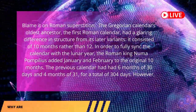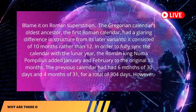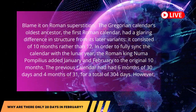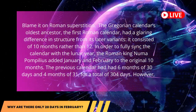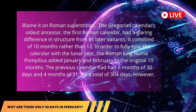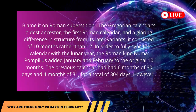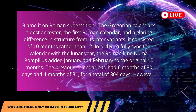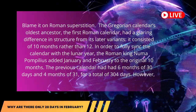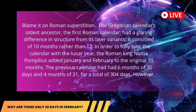Blame Roman superstition. The Gregorian calendar's oldest ancestor, the first Roman calendar, had a glaring difference in structure from its later variants: it consisted of 10 months rather than 12.